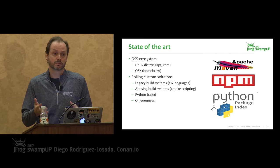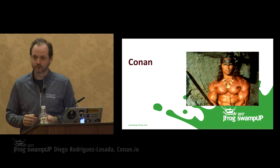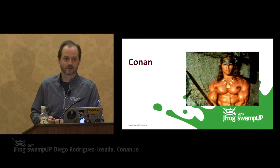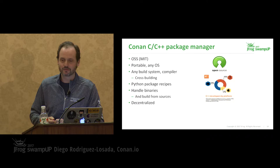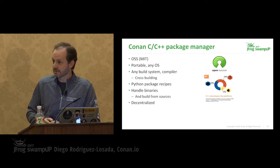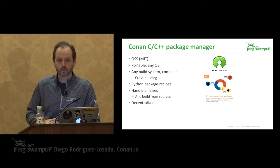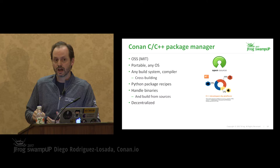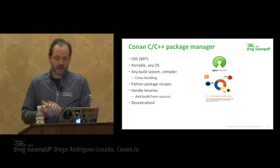Let me introduce Conan — and no, I won't be talking about the former governor of California. This is Conan C++ Package Manager. It is fully open source with MIT license, so very permissive. It is portable: if you can run Python, you can run Conan. It supports all operating systems — Windows, Linux, Mac — and is also used on FreeBSD and Solaris. If you don't have support for your embedded platform, you can do cross-builds.